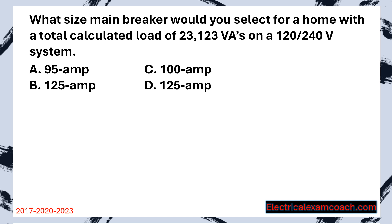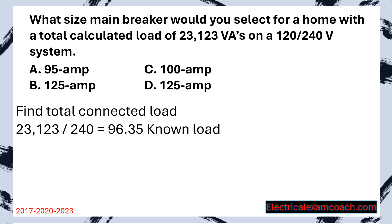What size main breaker would you select for a home with a total calculated load of 23,123 VAs on a 120/240 volt system? Step one: find our total connected load. They've already done the load calculation for us, so all we have to do is take our total known VAs and divide by the system voltage — that gives us our load in amps. In this case it's 96.35, and we would round down to 96.